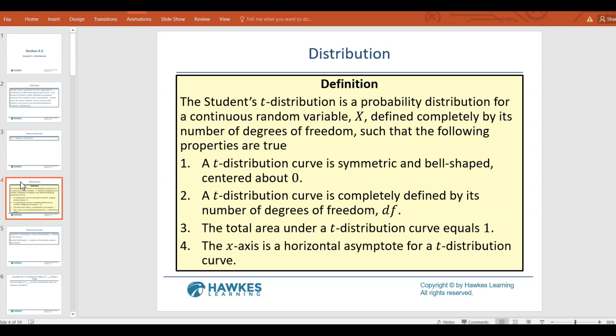These are some of the properties of the distribution. It's symmetric about zero, it's a bell curve. It's very similar to standard normal, but the big difference is there's more than one t-distribution. There's only one standard normal, and there are infinitely many t-distributions.